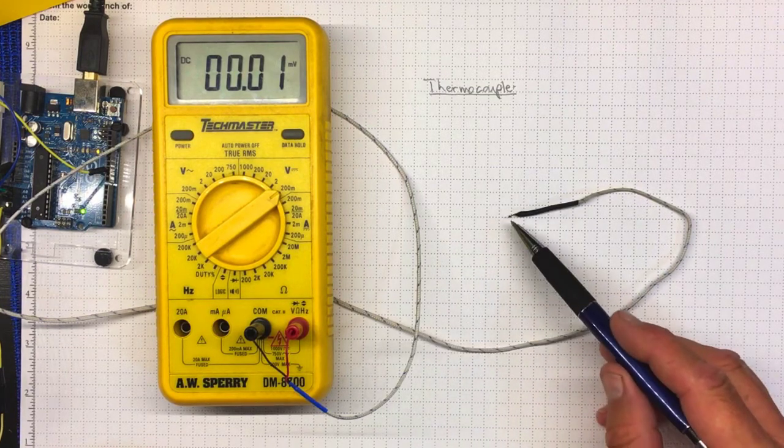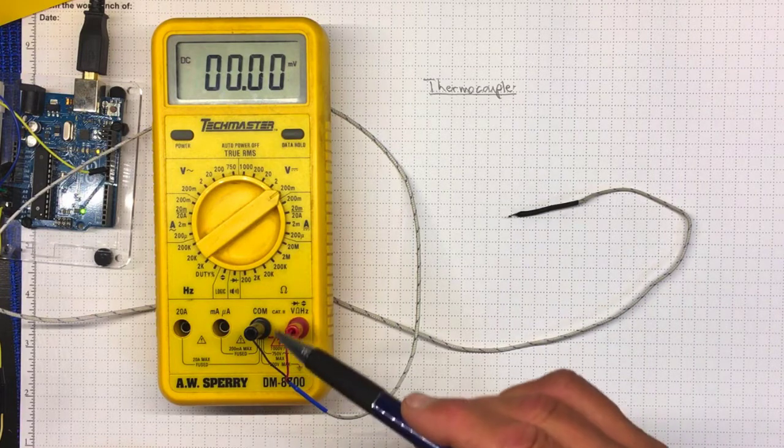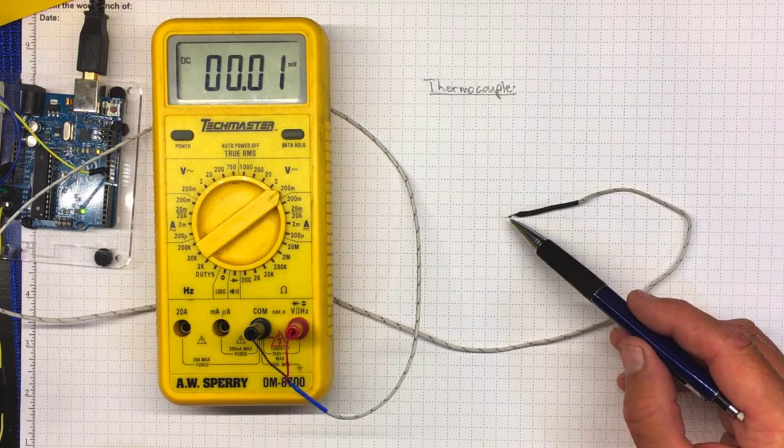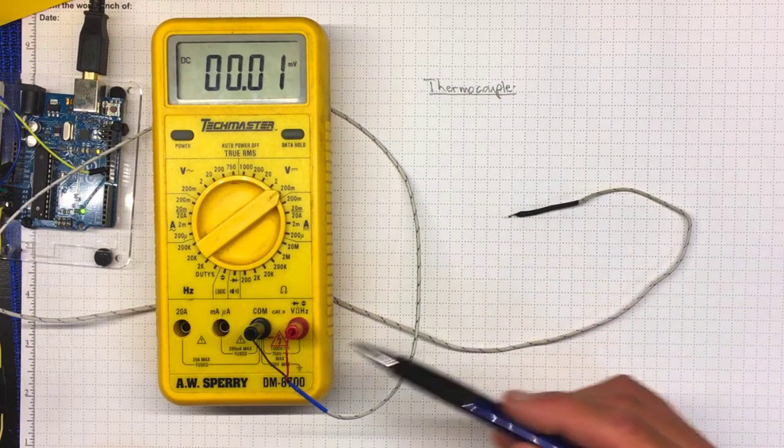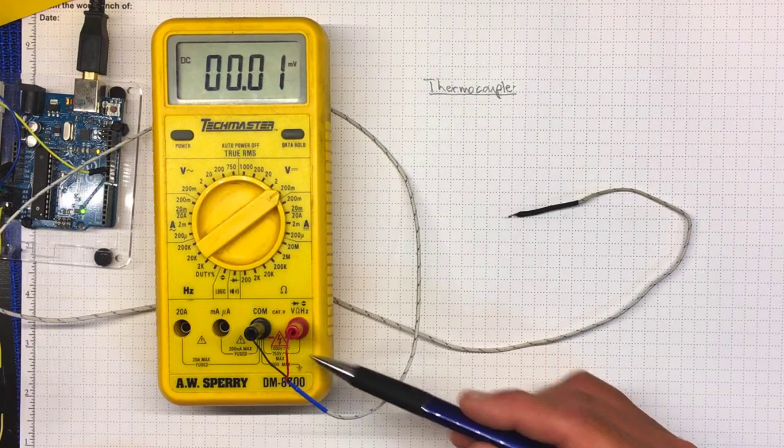Now this thermocouple will actually show a voltage on this circuit with no external power source if the temperature of this end, the measurement end, is different from this end, the cold junction end or the reference end.